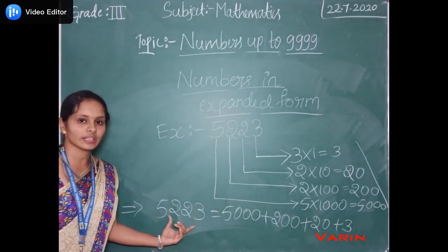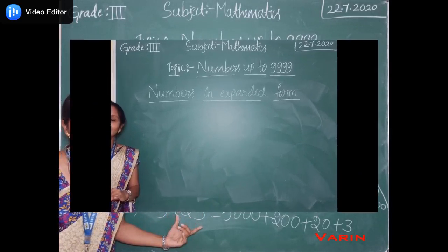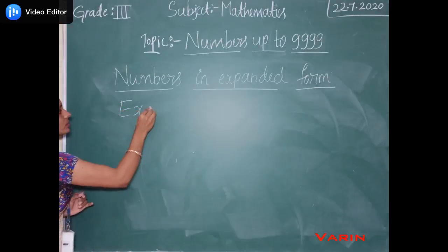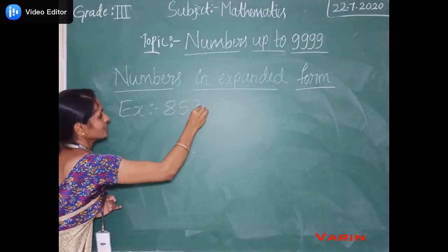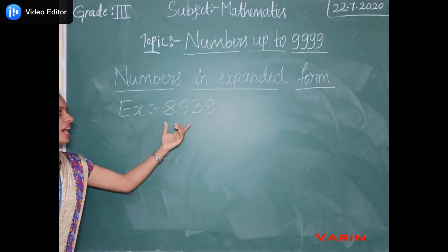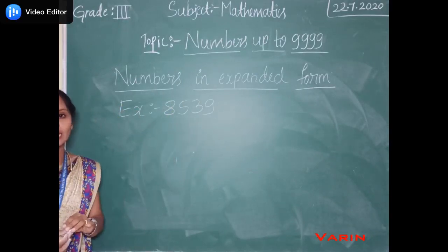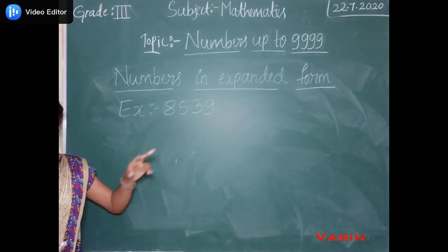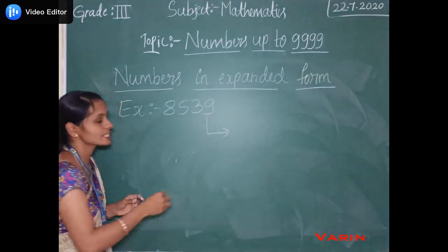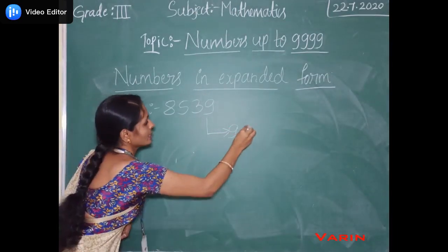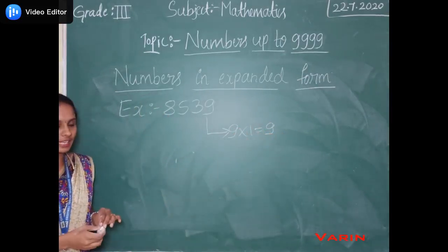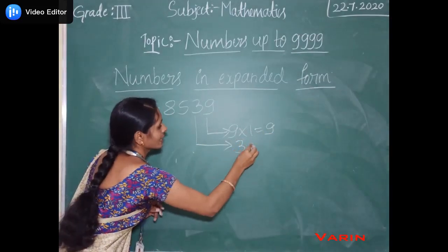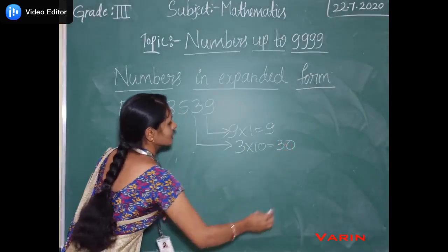Let us consider one more example. Example 2: Write the expanded form of the number 8539. First, we have to list out the place values. 9 is present in the ones place, so 9 into 1 it becomes 9. And 3 is present in the tens place, so 3 into 10 it becomes 30.